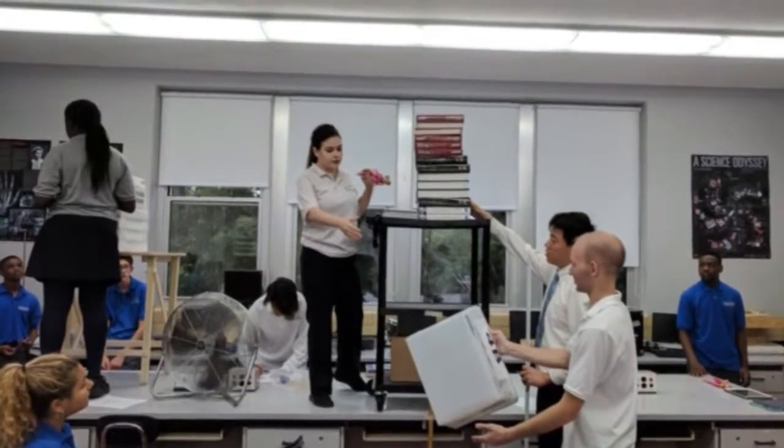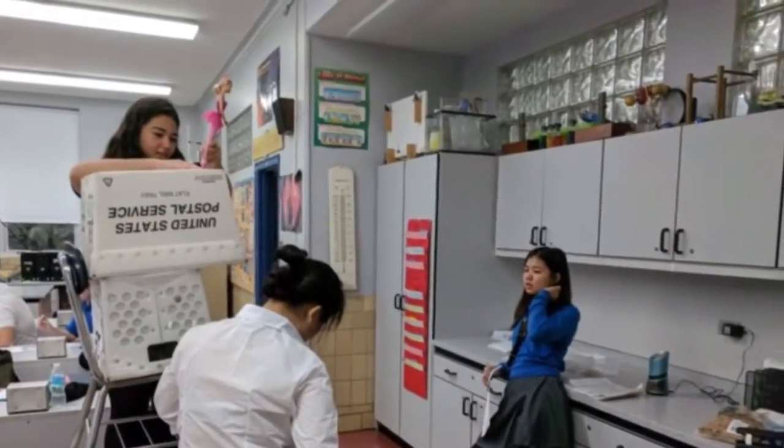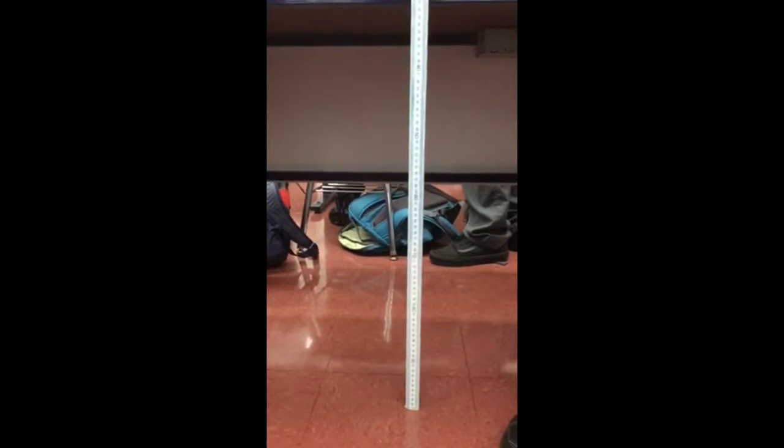Your next step is to set up a dropping station. You can use a meter stick or multiple to see how far your Barbie will drop. You should set up your meter stick in back of where you will be dropping your Barbie, so that when you take a slow motion video of her dropping, you will be able to see how far she falls.